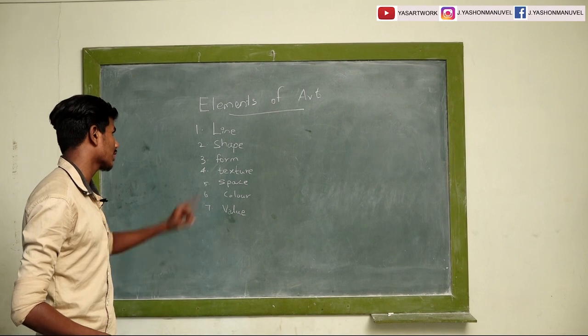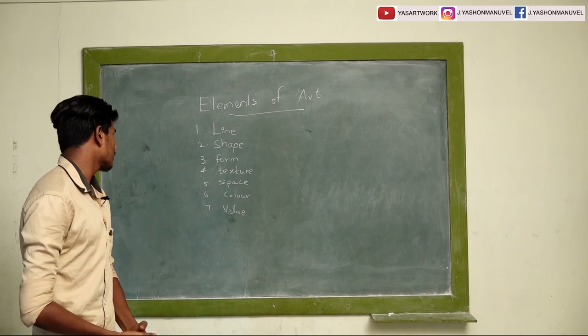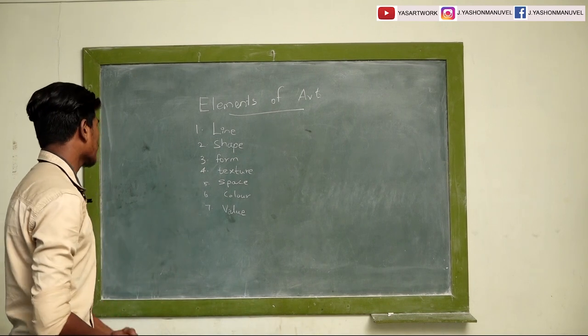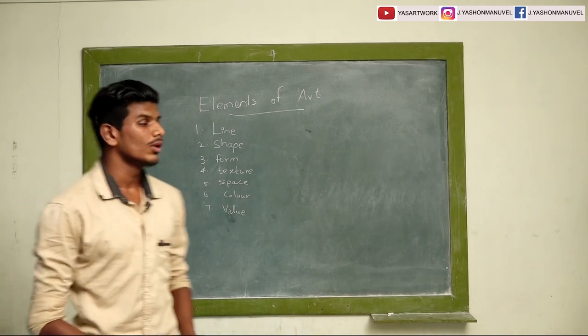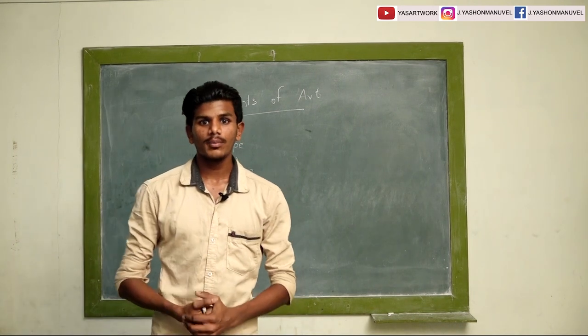The 7 elements are: Line, Shape, Form, Texture, Space, Color, and Value. This is important.